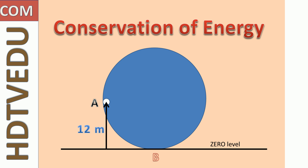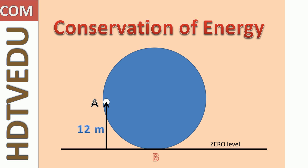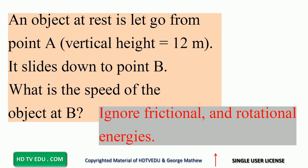Conservation of energy problem: we have point A and point B. An object at rest is let go from point A at a vertical height of 12 meters. It slides down to point B. What is the speed of the object at B? Ignore frictional and rotational energies. Point A is 12 meters vertically above the zero level; point B is at the zero level.